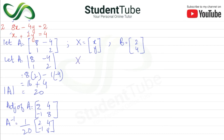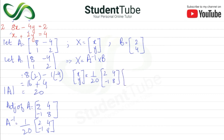Now, X equals A inverse times B. So the matrix [x; y] equals 1 over 20 times [2, 4; -1, 8] multiplied by B, which is [2; 4]. Multiplying: 2 times 2 plus 4 times 4 for the first row.